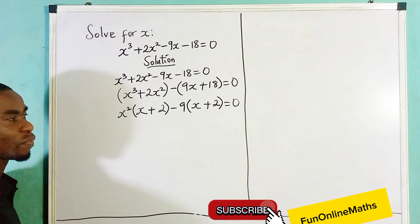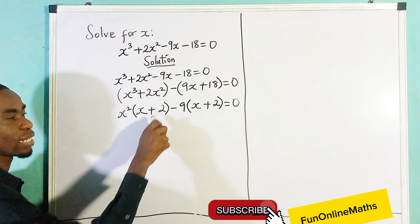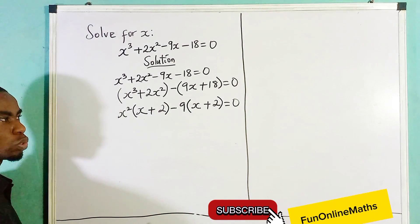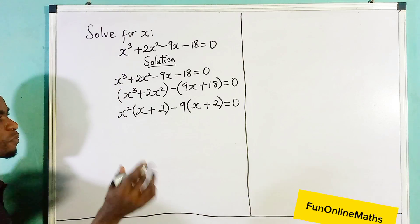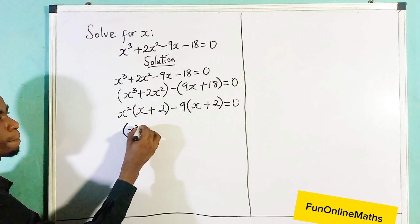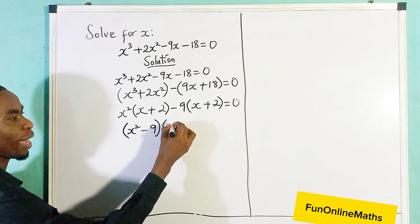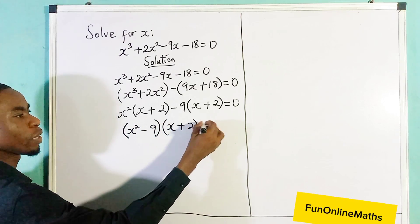So you discover that these brackets, these two brackets are the same. So what you do is just write one of them. But before that you form a new bracket with x² - 9, and then we have x + 2 equals to 0.